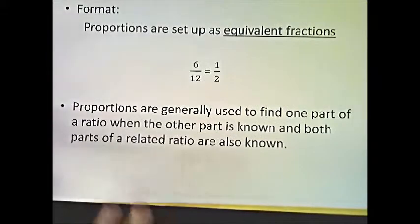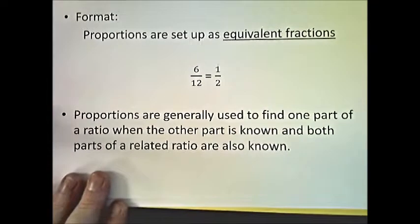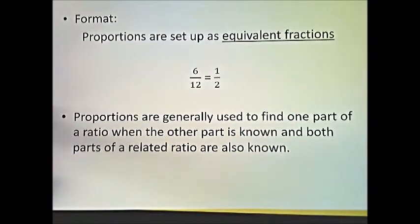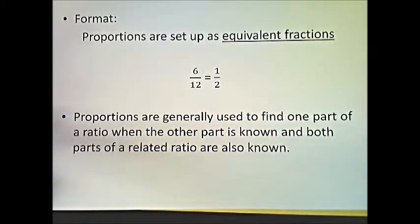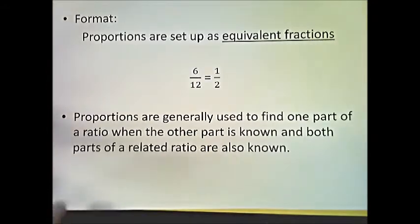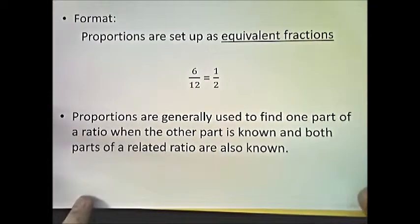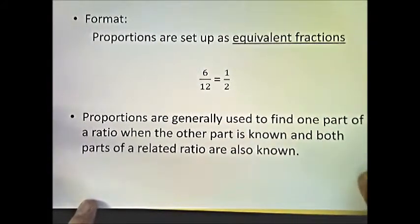Proportions are set up as equivalent fractions. For example, 6 over 12 is equal to 1 over 2. Using the pizza example, if you cut it into 12 pieces, then 6 over 12 represents how much of the pizza you have — and that's equal to one half. Proportions are generally used to find one part of a ratio when the other part is known, and both parts of a related ratio are also known.